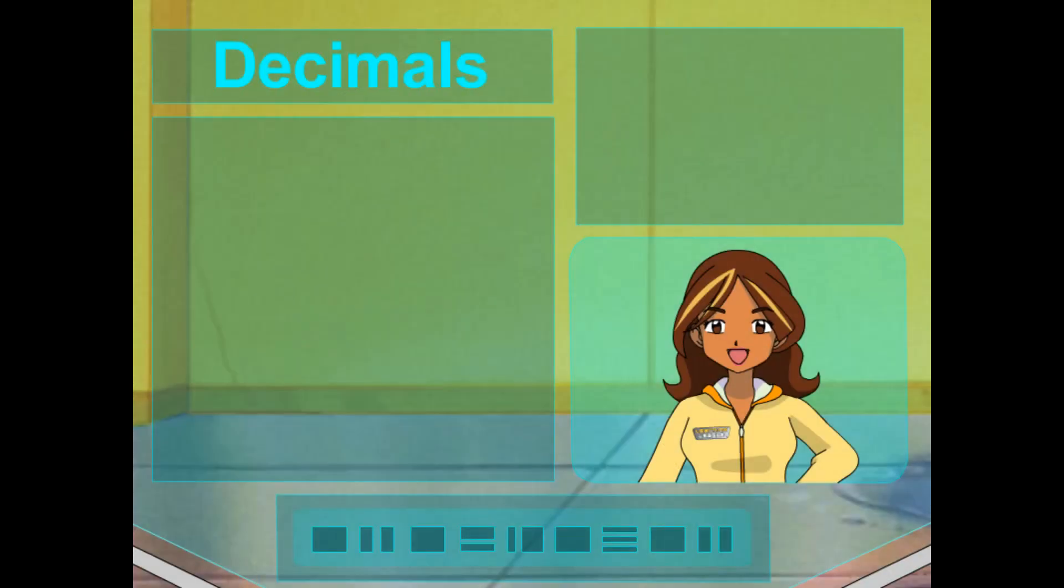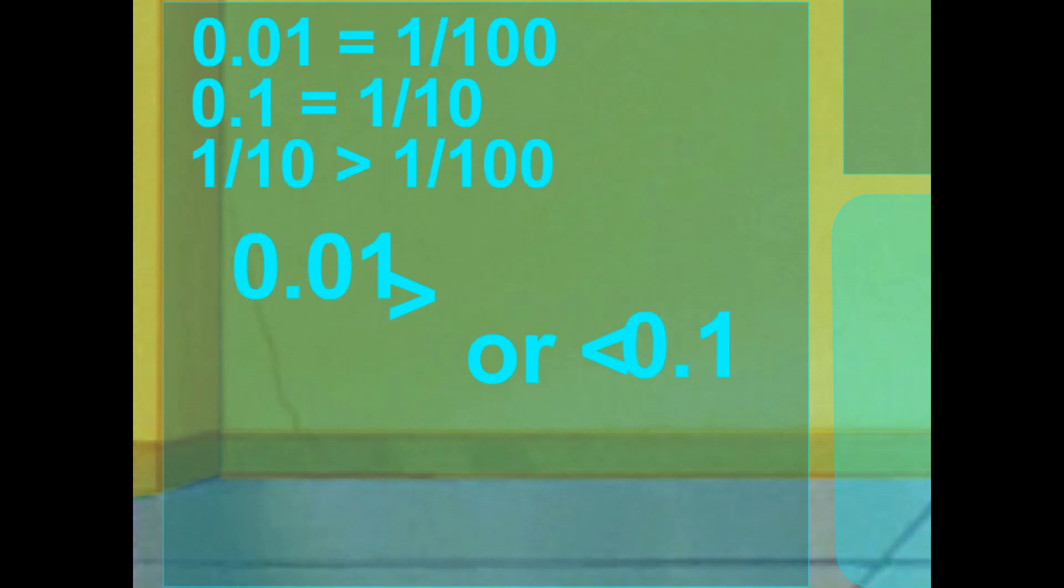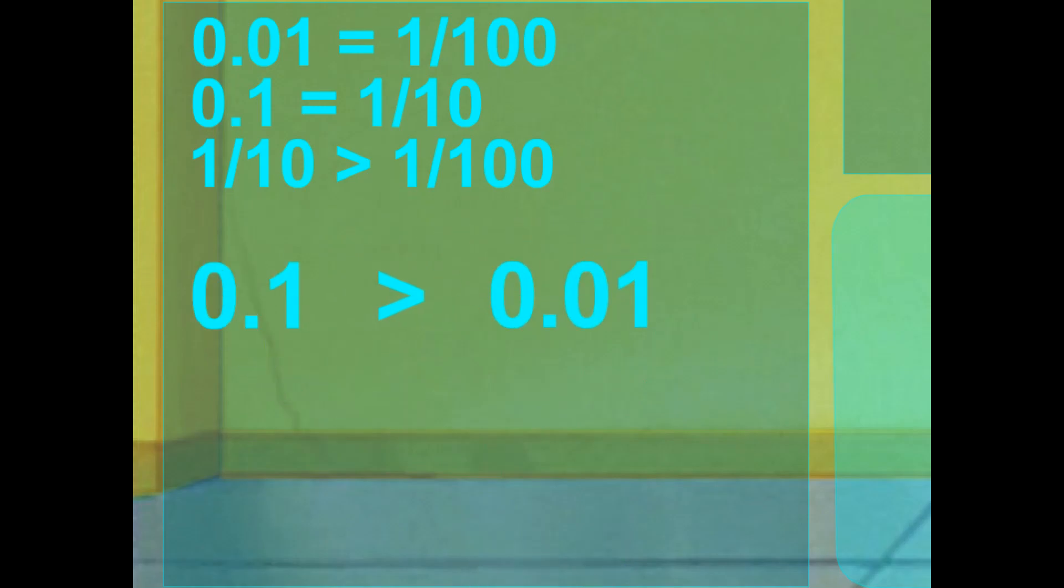Great! So then, using what you've learned so far, can you tell me, is 0.01 greater than or less than 0.1? Well, if 0.01 equals one hundredth, and 0.1 equals one tenth, I know that one tenth of a whole is greater than one hundredth of a whole. So, 0.1 is greater than 0.01. Misty, you are great at decimals!